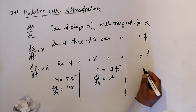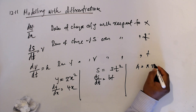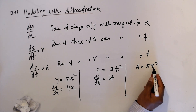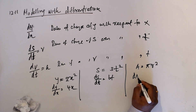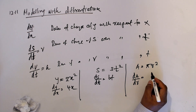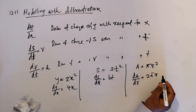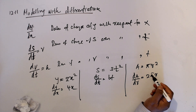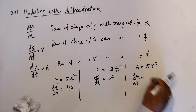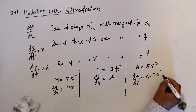Now assume the area of a circle is A = 5r². The rate of change of area with respect to radius is found by differentiating: 5 stays as it is, and differentiating r² gives 2r, so dA/dr = 10r.